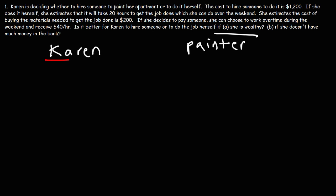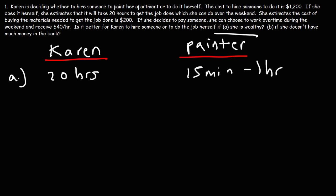Which decision will save her the most time? If she does it herself, it will cost her 20 hours of time. If she hires a painter, it will probably cost her anywhere from 15 minutes to an hour to research the right painter and call him to come over to do the job. So hiring the painter saves her time — this is the option she will most likely choose if she's wealthy, as she will be more concerned about saving time than saving money.